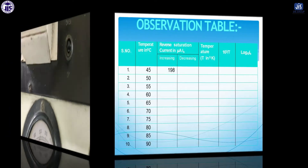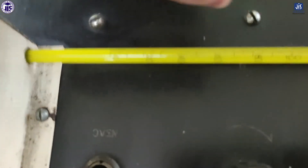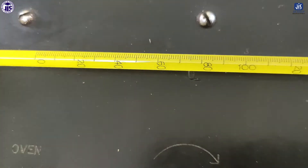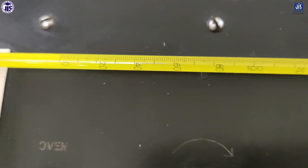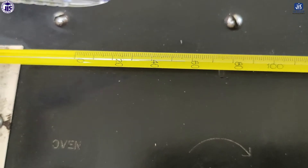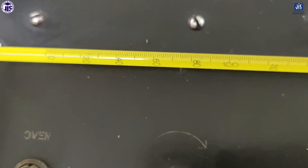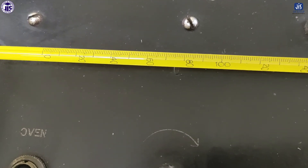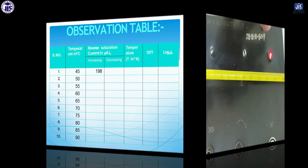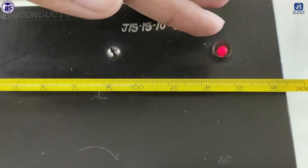What we have to do is wait for the temperature to keep increasing and take readings up to 90 degrees in 5-degree increasing intervals. After the temperature crosses 90 degrees, you have to stop the increasing part by switching off the oven. In the table we have an increasing part and a decreasing part. First take readings from 45 to 90 degrees — at 45, 50, and so on up to 90 degrees.